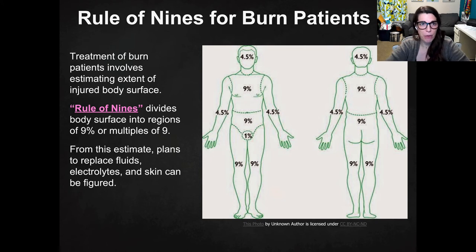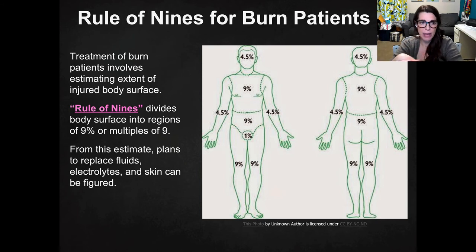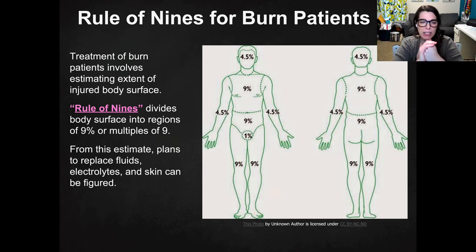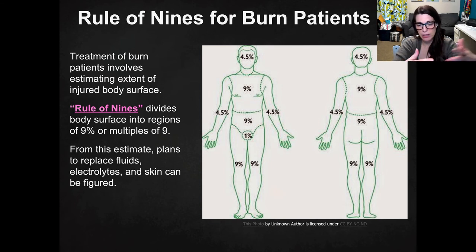For burns, we have the rule of nines for burn patients. When treating a burn patient, the first thing you do is estimate the percentage of the body's surface that has been burned and to what extent. This is done by dividing the body into regions of 9% or multiples of nine. That information is used to plan recovery — calculating replacement fluids, electrolytes, and skin grafts.